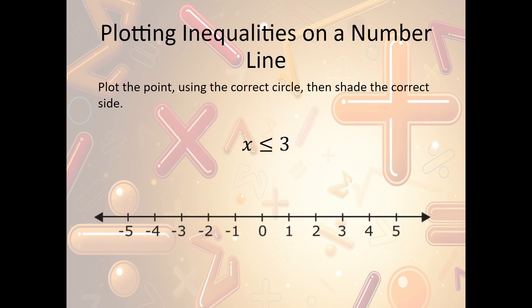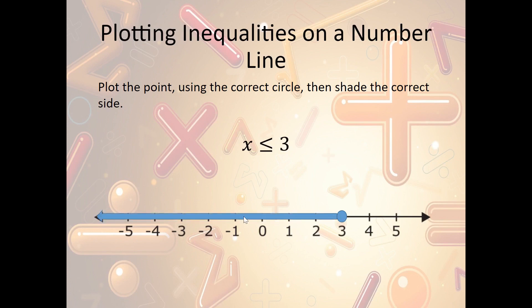Let's look at another example: x is less than or equal to three. We start with an open circle at three and decide whether they added anything extra. They added the bar underneath, so we will too — we get a closed circle. Now we're looking at all the x's smaller than three. Pac-Man is eating three, so three is bigger than all the x's. Where are all the x's smaller than three? They're on the left side, so we shade in that direction.